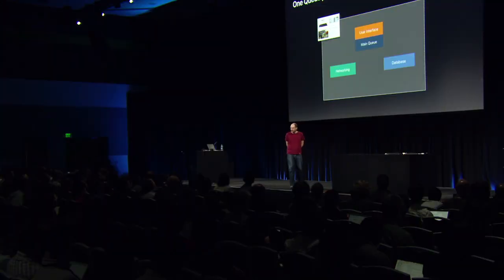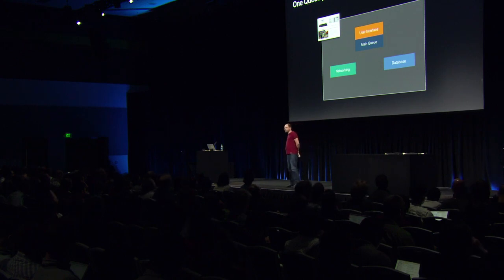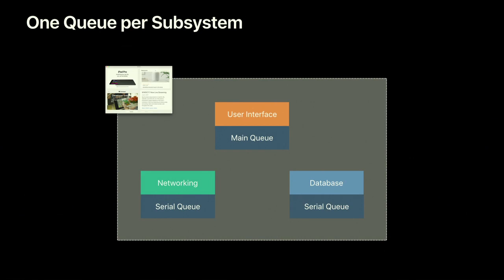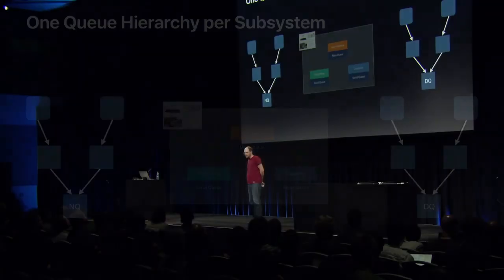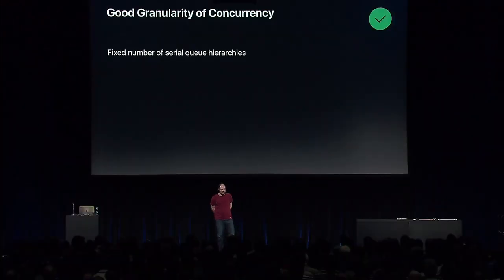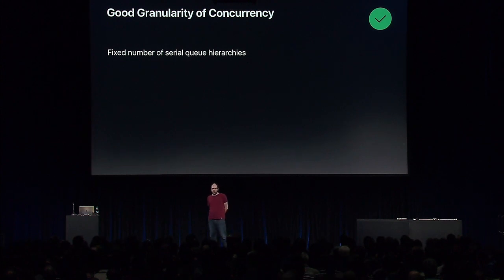How do you choose the right amount of concurrency? One idea is to use one queue per subsystem. In our news application, we have one queue for the UI (the main queue), one serial queue for networking, and one for the database. More generally, use one queue hierarchy per subsystem. This gives a mutual exclusion context for the subsystem while leaving the rest of the queue and source structure alone. It may make sense to have additional hierarchies for complicated subsystems — a secondary one for slower or larger work items so the primary one keeps the subsystem responsive.